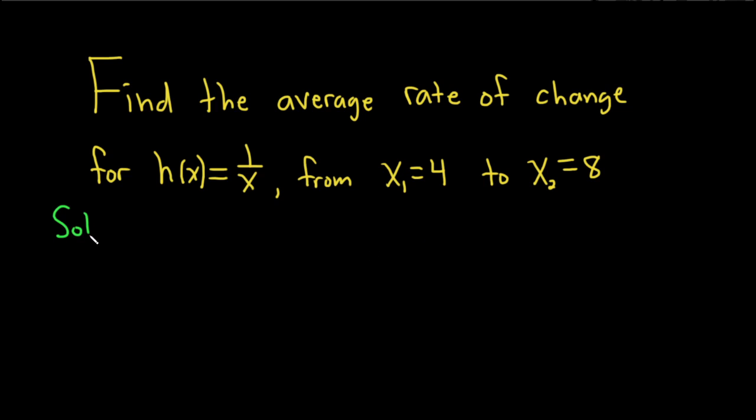Solution. So the formula that is usually given for the average rate of change is something like this: It's f of x sub 2 minus f of x sub 1, over x2 minus x1.